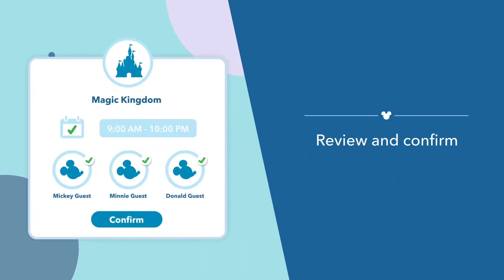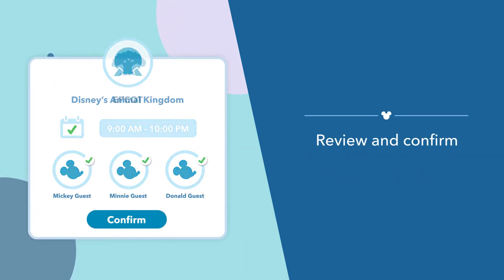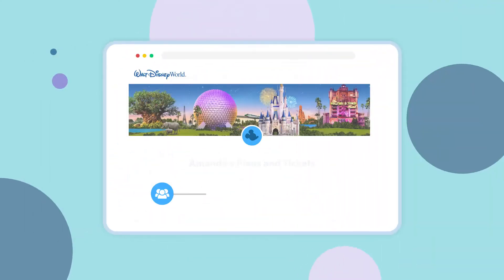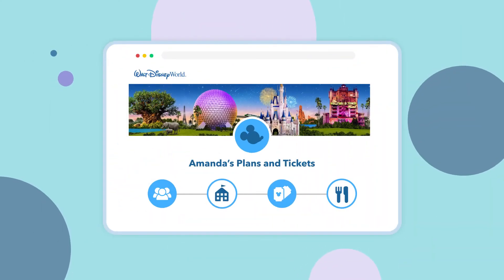Finally, review your reservation details and confirm. Repeat for each day of your visit. Your park reservations can be viewed in the My Plans section of your My Disney Experience account.